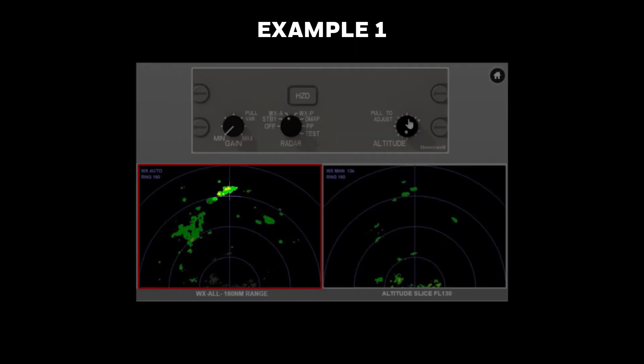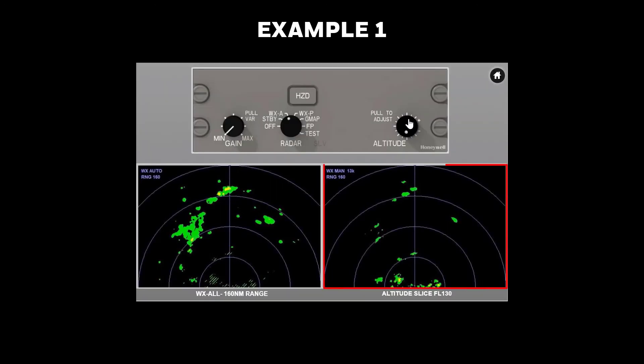120 miles ahead, there is some yellow reflectivity that warrants attention. Let's look at these two features using constant altitude slices.